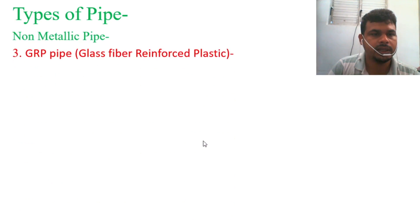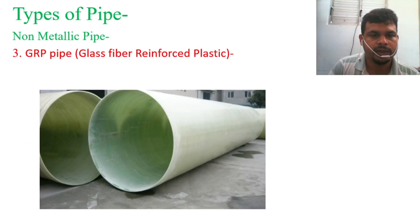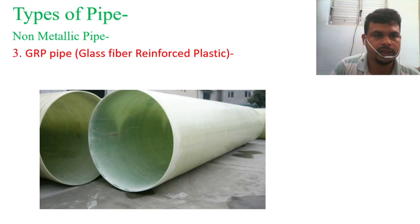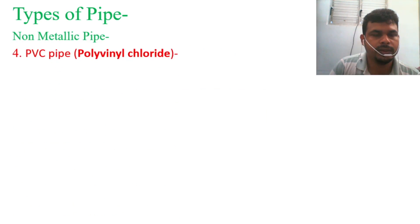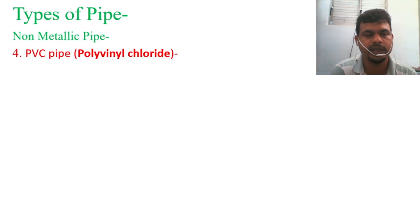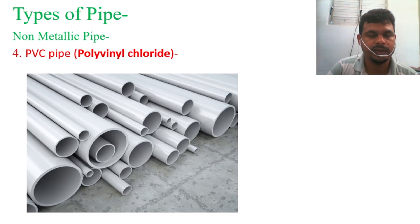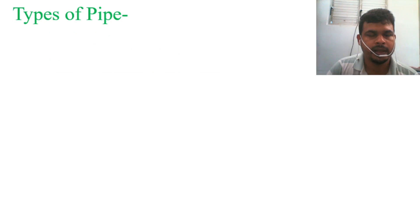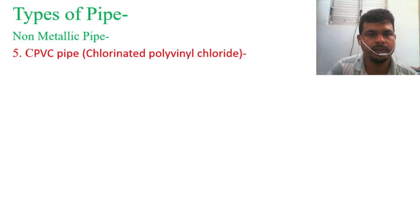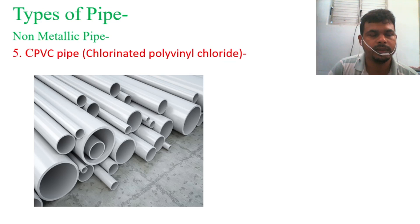Number 3 is GRP — Glass Fiber Reinforced Plastic pipe. As you can see from the photos, it looks similar to GRE but this is the GRP pipe — Glass Fiber Reinforced Plastic. Number 4 is PVC pipe — Polyvinyl Chloride. We are very familiar with this word PVC because we use this pipe in our homes as well. And number 5 is CPVC pipe — Chlorinated Polyvinyl Chloride — which looks similar to the PVC pipe.